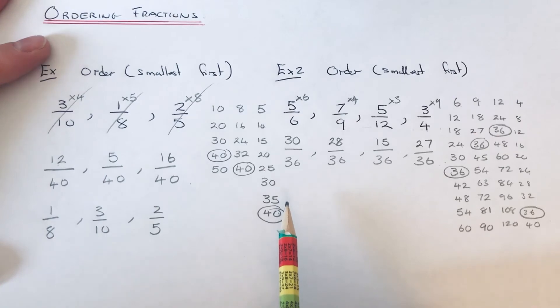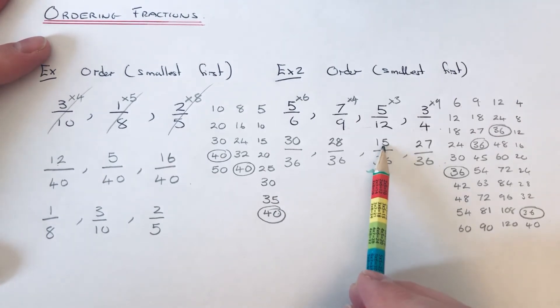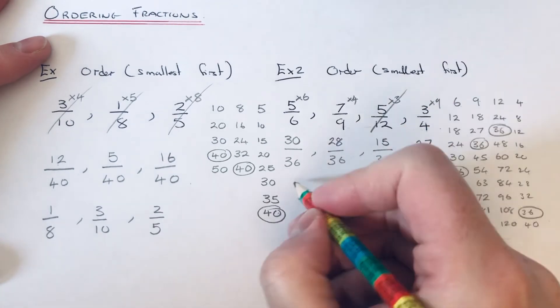We just need to look at our numerators now to find out our smallest fraction. It's looking like 15 out of 36, which is 5/12.